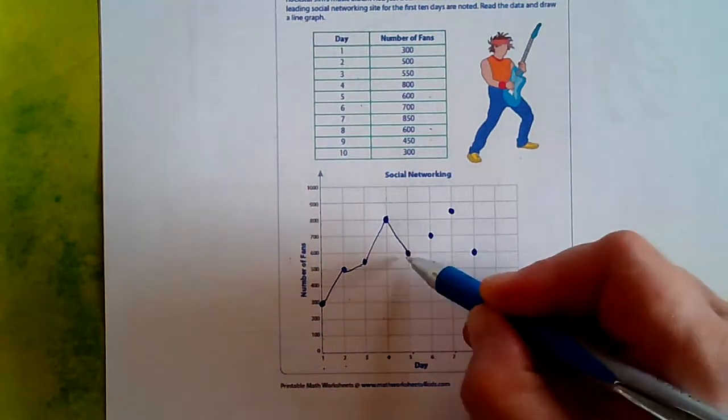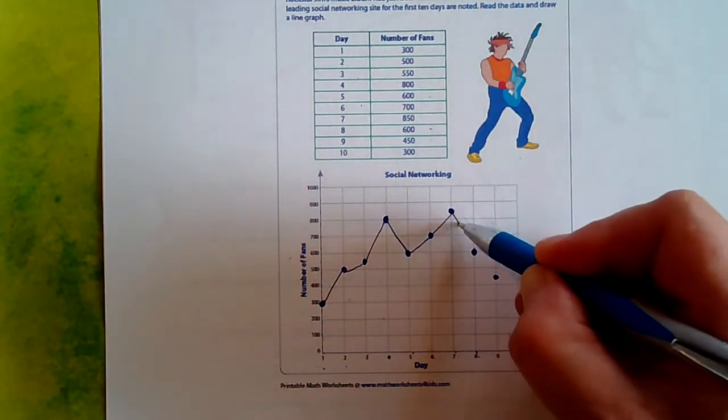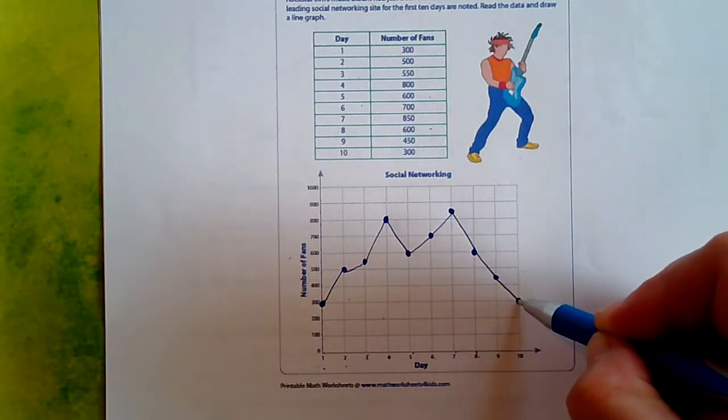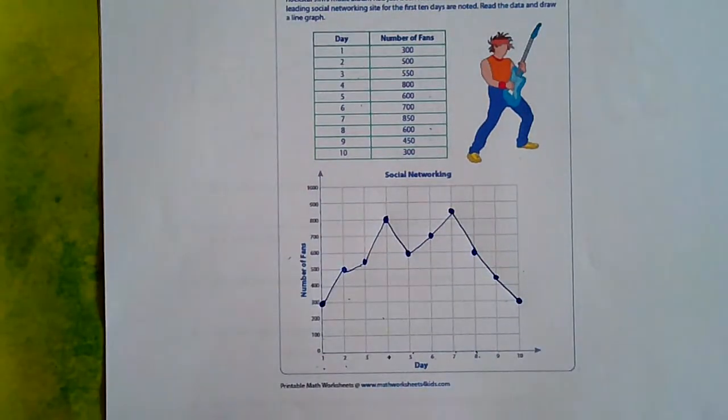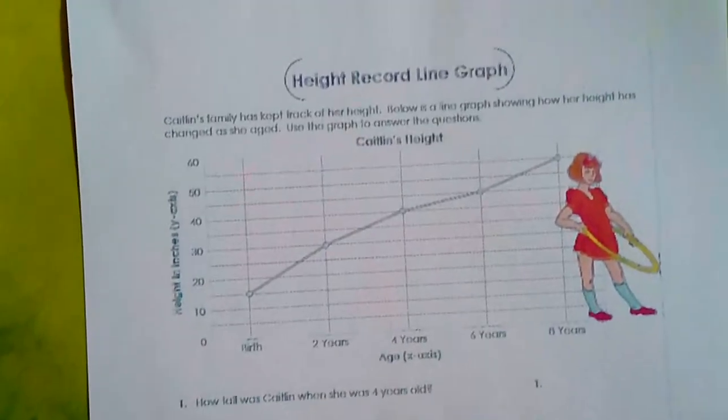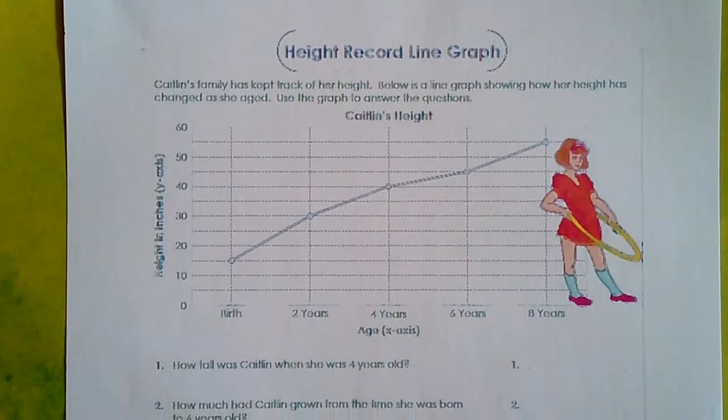Just like connect the dot in kindergarten. The good old years, right? And now we have a perfect line graph. So this graph shows Rockstar Jim's number of fan followers that he had per day for 10 days. All right. The next thing we're going to do is answer some questions off of this chart.